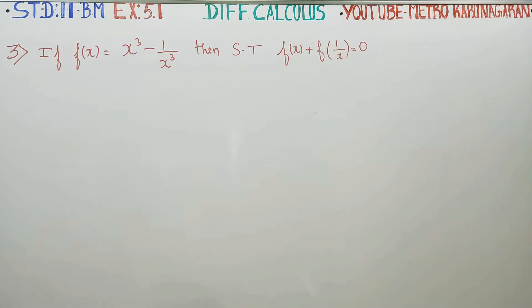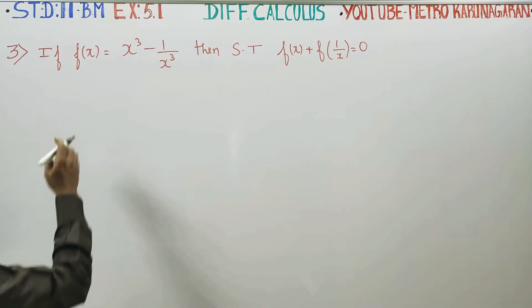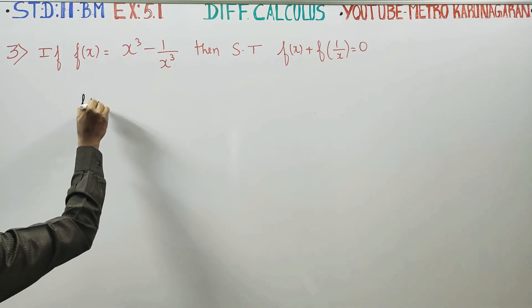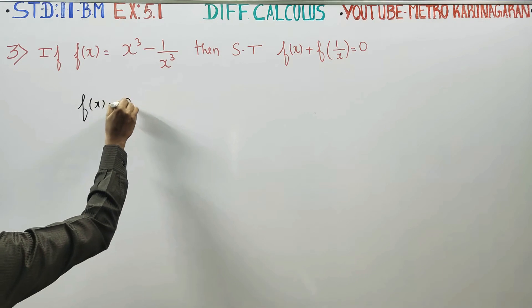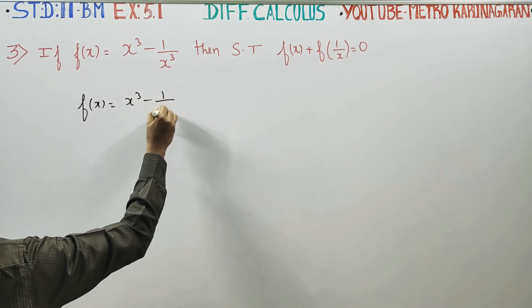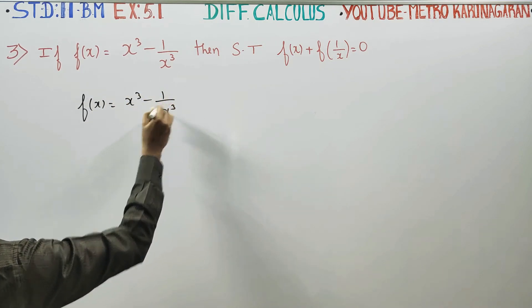The information given in this sum: f of x is equal to x cube minus 1 by x cube.